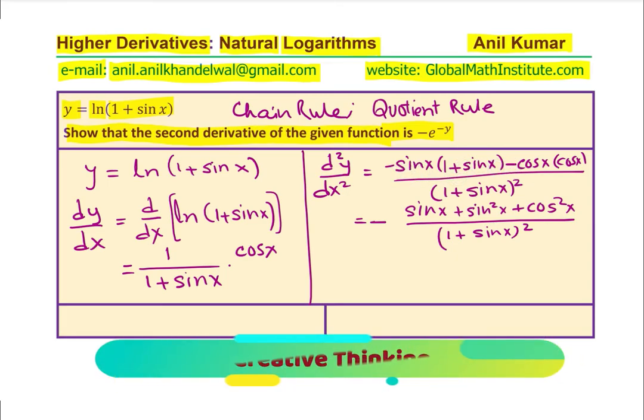Now, we know what is sin²x plus cos²x. It is 1, right? And therefore, we can write this as sin x plus 1 over (1 + sin x) whole square. So, we can cancel and simplify this and write this as 1 over (1 + sin x) with a negative sign as shown here.